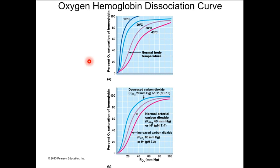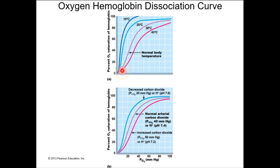Colder temperatures make chemical reactions happen slower, and that's how I connect the idea of temperature to this dissociation curve. You have your normal body temperature, about 38 degrees C. If your body temperature increases, you will release oxygen more readily into tissues. So even in the presence of more oxygen, less binding will occur — it is less association, more dissociation. Elevated temperatures shift the curve to the right.